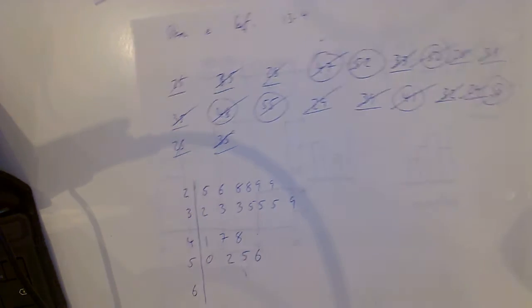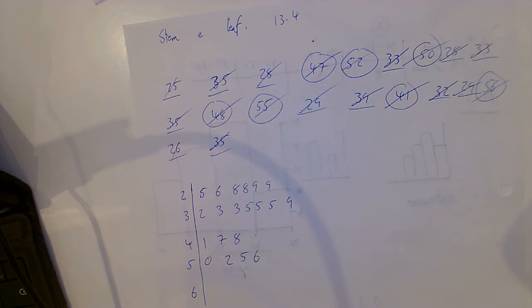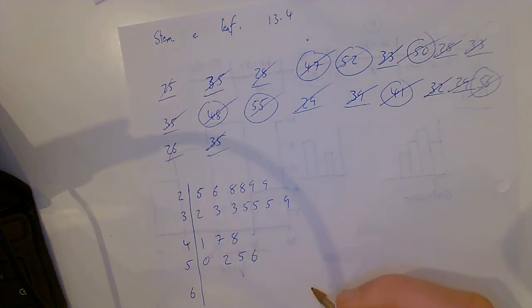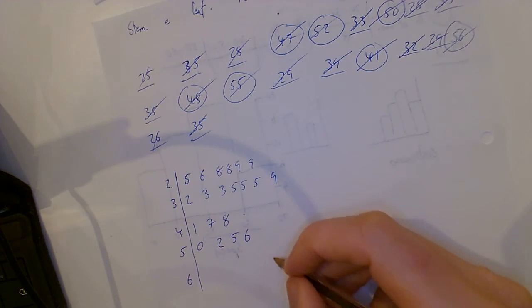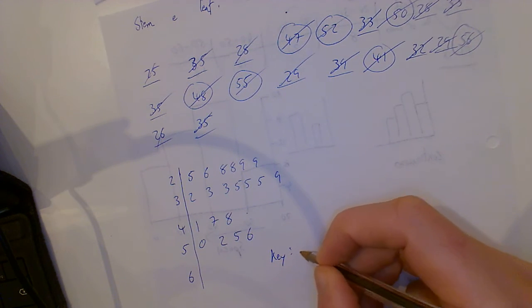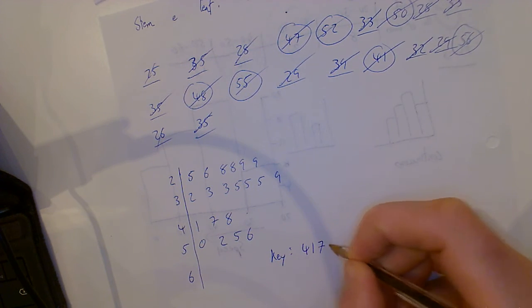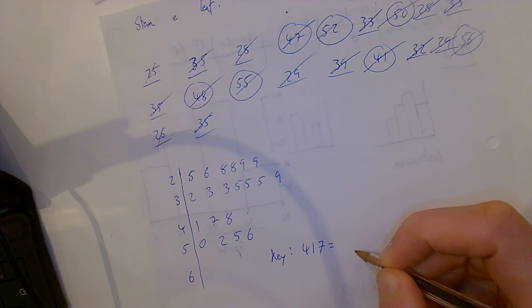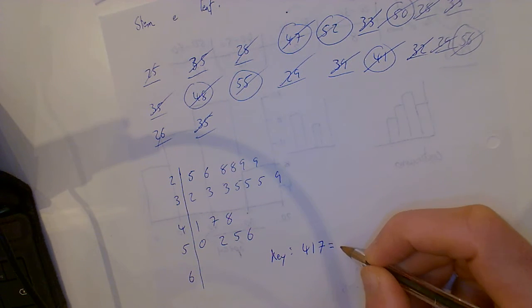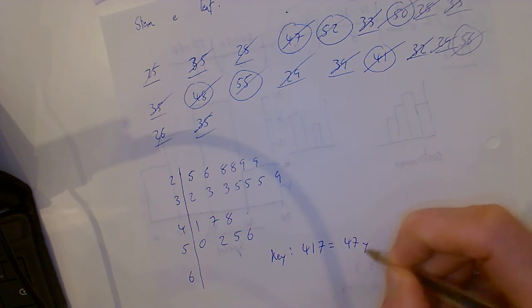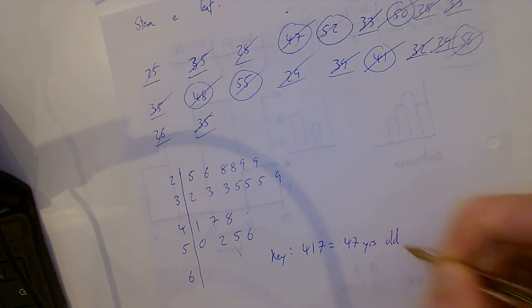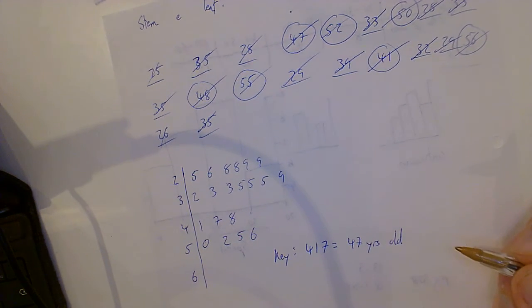I've got 20 there, so it's perfect, it matches up now. The key, there's a thing here called the key, and this is what you have to put in each time. I can choose any random one, so I'm going to go 4|7. I could have done 5|0 or 3|3, and then I'll just say what that represents: 47 years old.